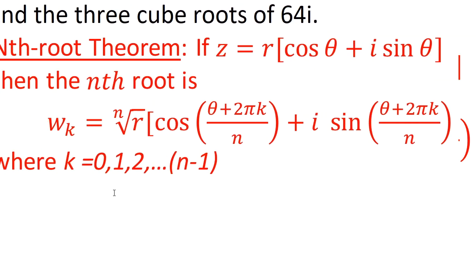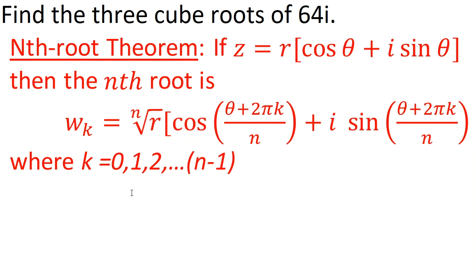To write -64i in terms of cosine and sine, I have to think of a value of theta where cosine is 0 and sine is positive, because -64i is going to equal -64 times the cosine of π/2.